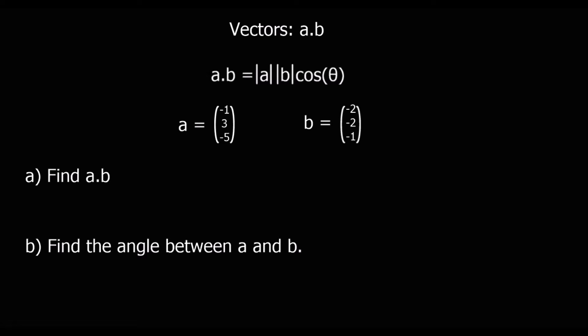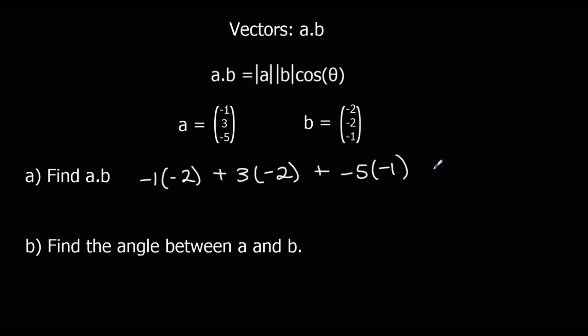We're going to find a·b and find the angle between them — find theta. a·b is going to be the i's times together: negative 1 times negative 2; plus the j's times together: 3 times negative 2; plus the k's times together: negative 5 times negative 1. That gives us 2, take away 6, plus 5, which is 1. So a·b is 1.